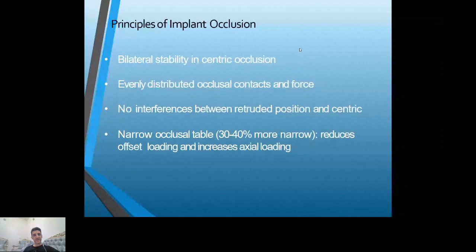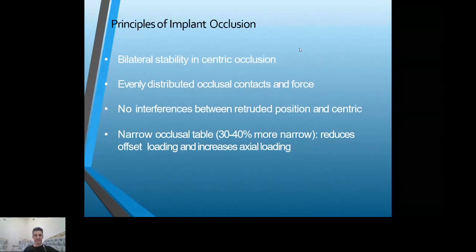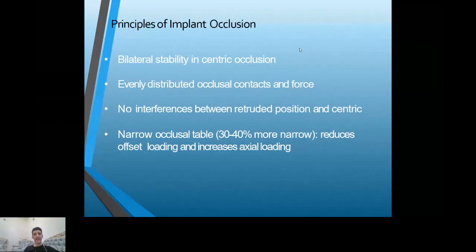The principles of implant occlusion include bilateral stability in centric occlusion, even distribution of occlusal contact and force, and no interference between protrusive position and centric. In centric position, we have no contact on the implants. The occlusal table — the width of the occlusal surface of the implant — must be narrower than normal teeth to decrease the occlusal table.